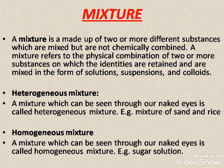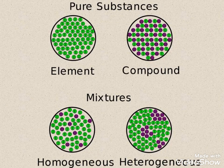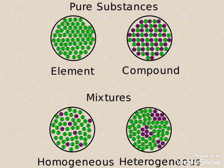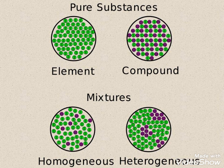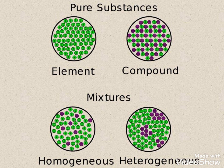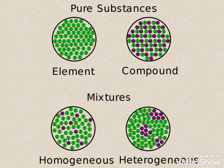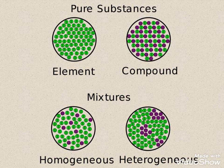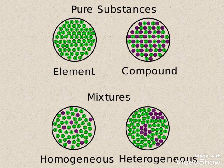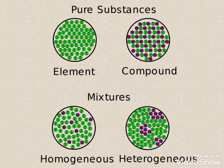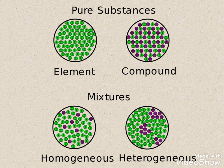In a heterogeneous mixture, the components are not uniformly distributed, resulting in different properties in different parts. Pure substances are classified into elements and compounds. Elements are made up of only one type of molecule. Compounds are made up of more than one type of molecule but in a fixed ratio. Mixtures contain different types of molecules but not in a fixed ratio. Homogeneous mixtures have the same properties throughout due to uniform distribution of particles, whereas heterogeneous mixtures have different properties in different parts due to non-uniform distribution.